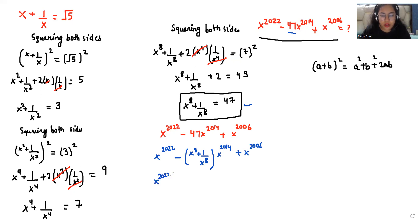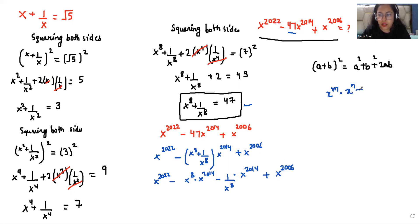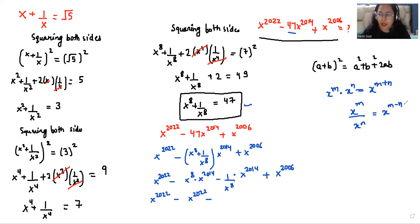According to the exponent rule x power m times x power n equals x power m plus n, we expand: x power 2022 minus x power 8 times x power 2014 minus 1 over x power 8 times x power 2014 plus x power 2006. This gives x power 2022 minus x power 2022 minus x power 2006 plus x power 2006. Here the terms cancel: x power 2022 minus x power 2022 is 0, and x power 2006 minus x power 2006 is 0.